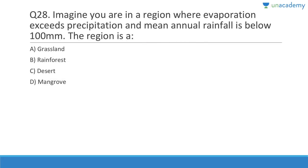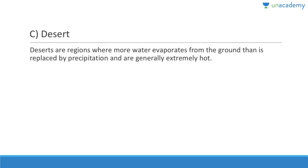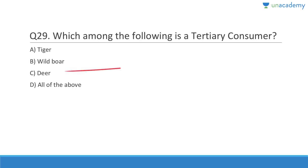Question 28: Imagine a region where evaporation exceeds precipitation and mean rainfall is below 100 mm. Answer is C — it is a typical desert. Deserts are regions where more water evaporates from the ground than is replaced by precipitation, and they are generally extremely hot.